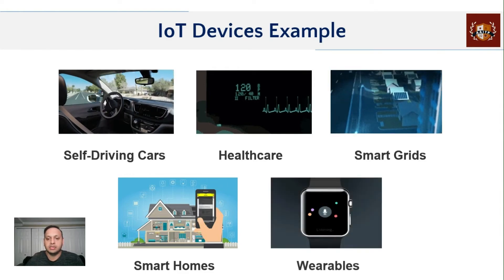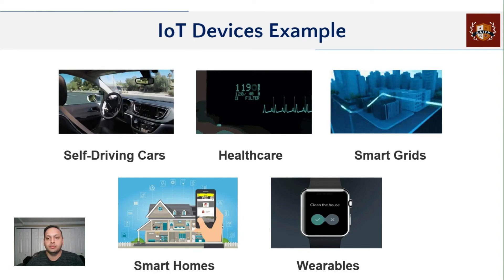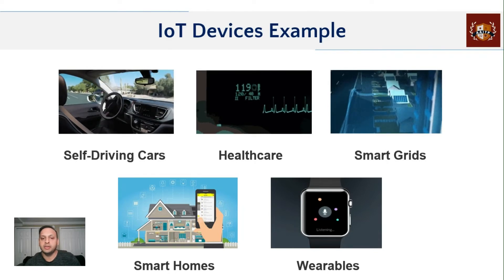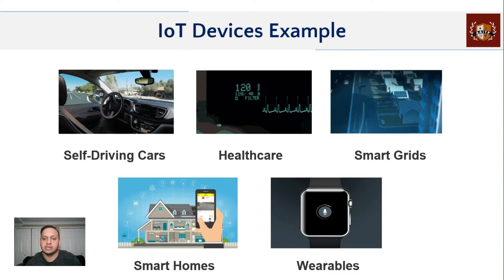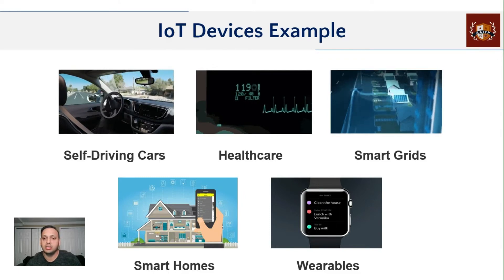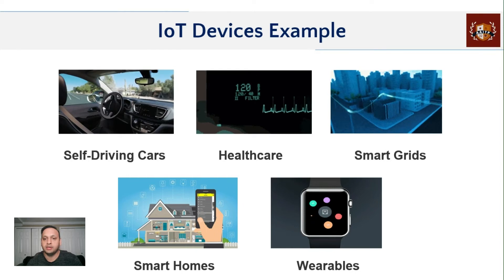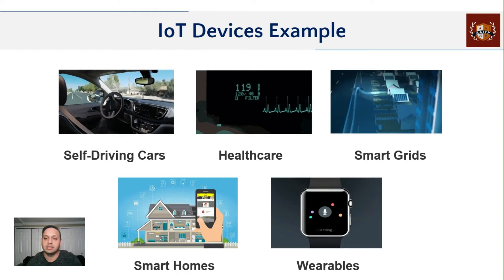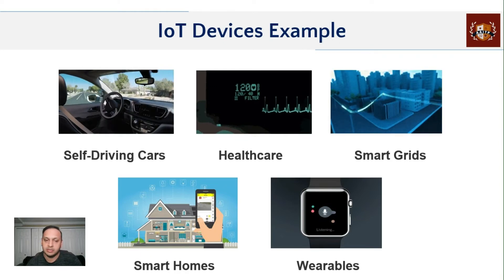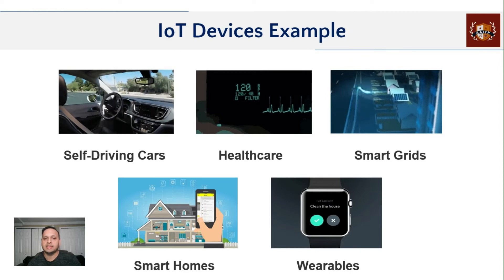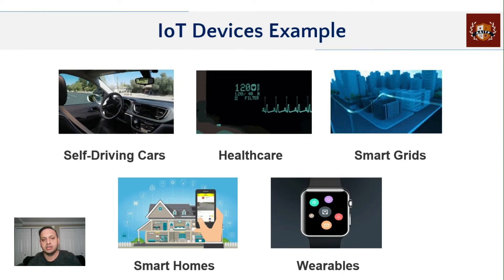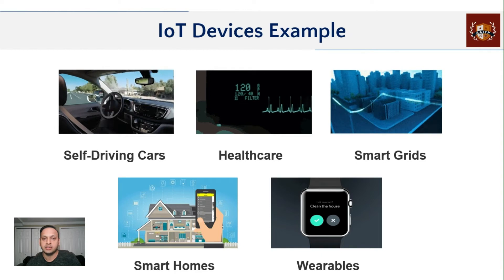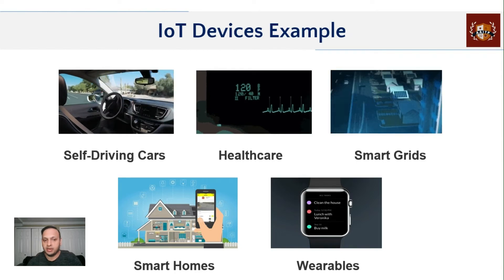A very common example is wearables. A smartwatch like the Apple Watch is a classic example where you can get notifications, control some actions, set reminders, and switch on or off nearby smart plugs — all from your watch. These are IoT device examples. These days each and every sector and household has been adapting to IoT. Whether we want it or not, we are already part of the ecosystem.